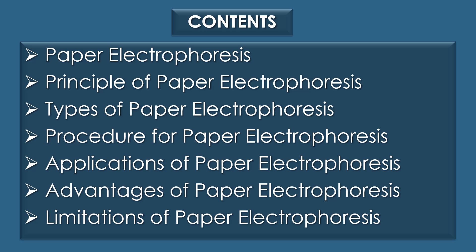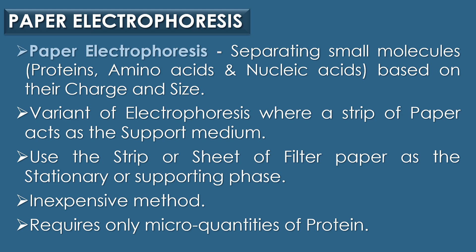And finally, limitations of paper electrophoresis. Paper electrophoresis is a technique used for separating small molecules such as proteins, amino acids, and nucleic acids based on their charge and size. It is a variant of electrophoresis where a strip of paper acts as the support medium, involving the use of a strip or sheet of filter paper as the stationary or supporting phase. It is an inexpensive method and requires only micro quantities of proteins.